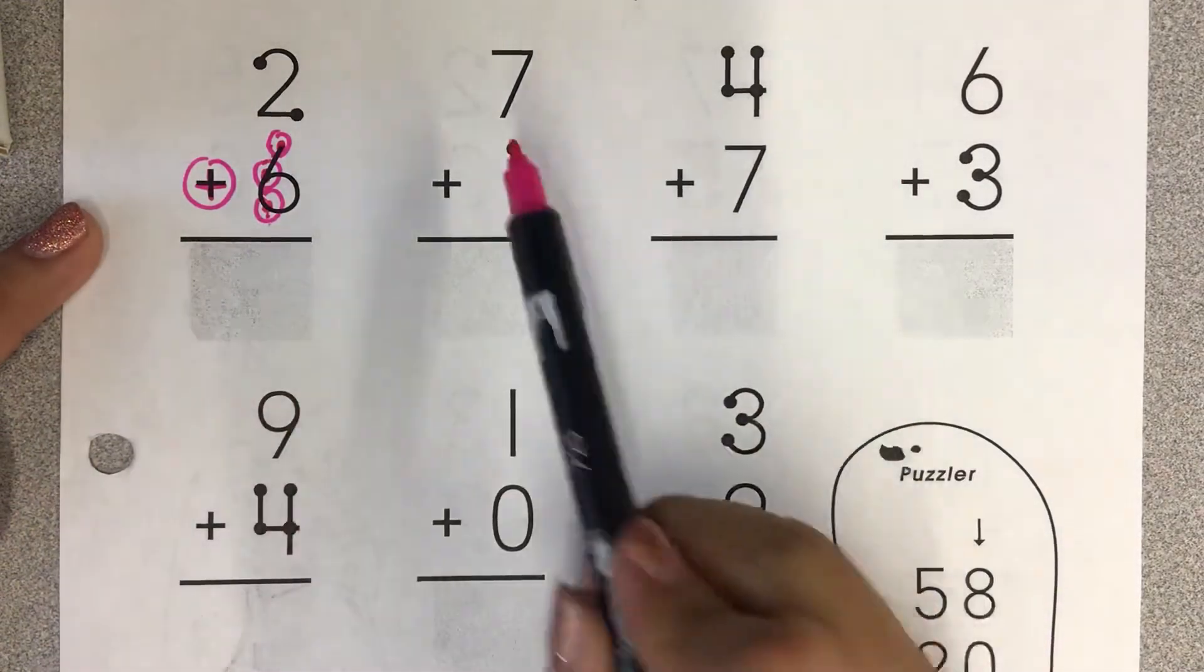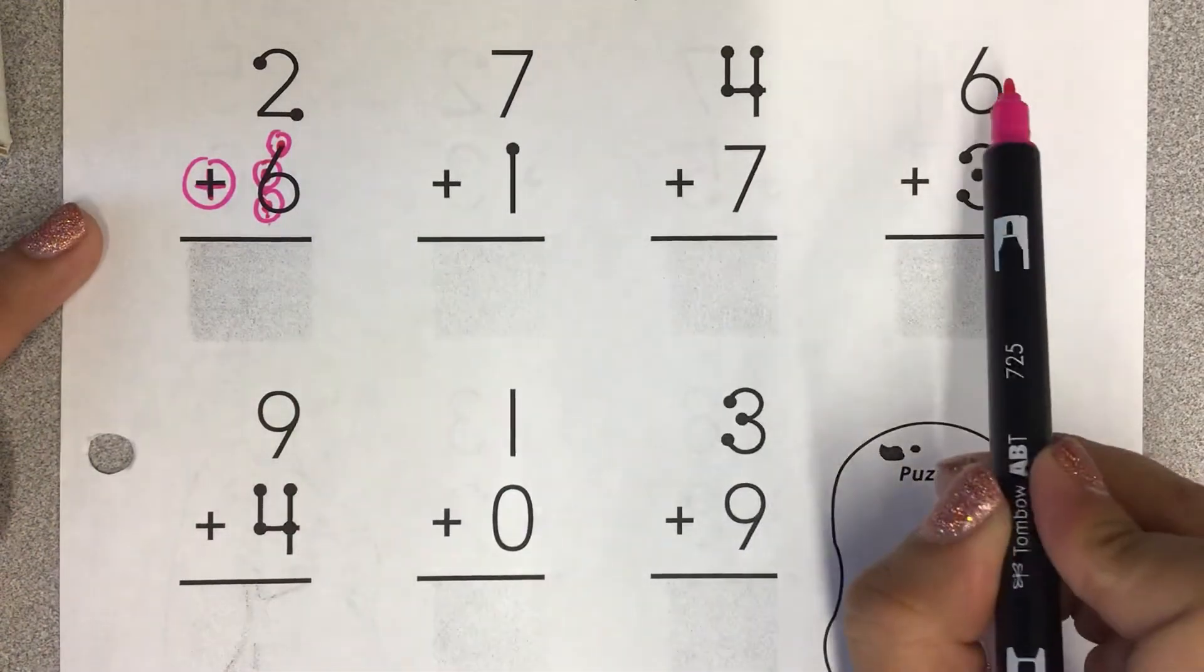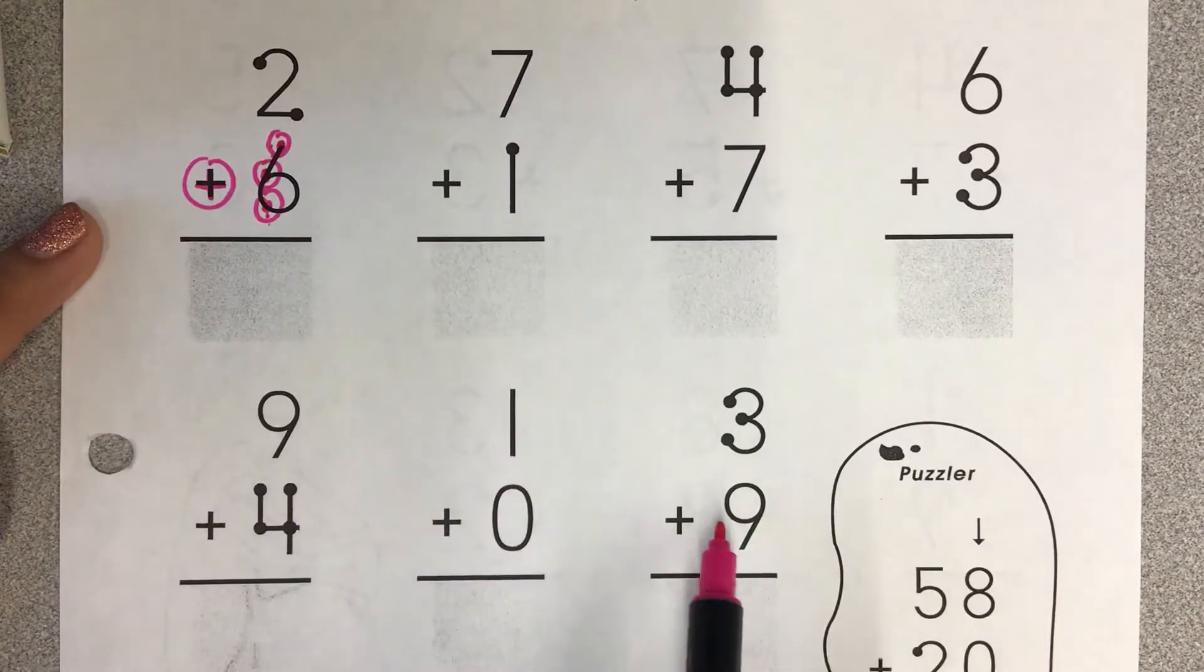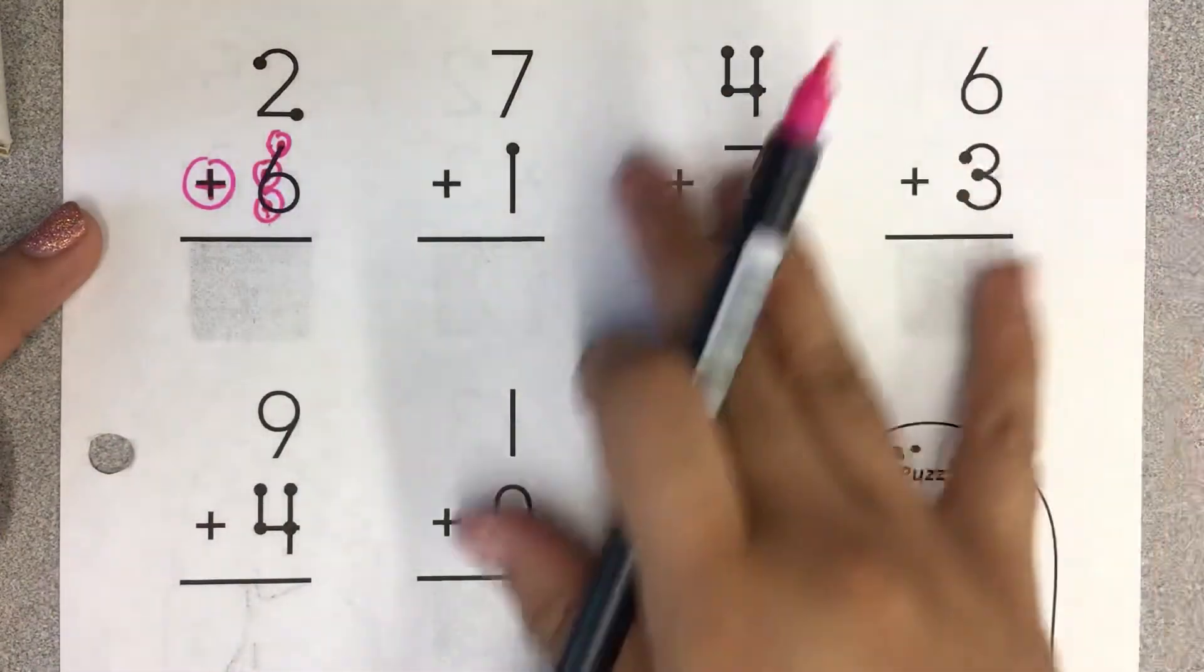So I want you guys to practice writing out your touch points on all the numbers that don't have the touch points. And then to practice your addition by counting all of them up together.